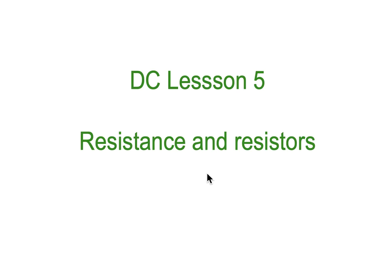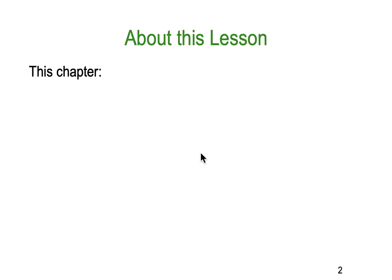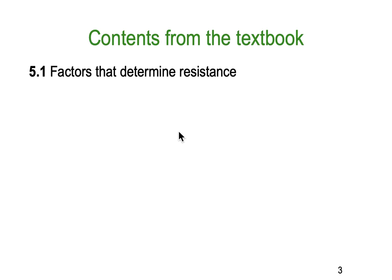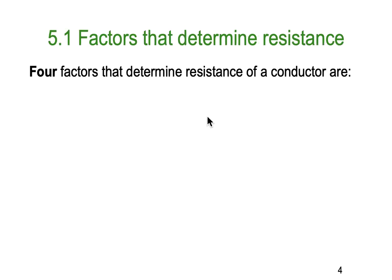Hello, it's Dr. Ken here with you once again. We're up to DC lesson, and this is Part A. About this particular lesson, it explains the factors that determine the resistance of a conductor. And if you're wanting to follow on from the textbook, it's Section 5.1, Factors That Determine Resistance.